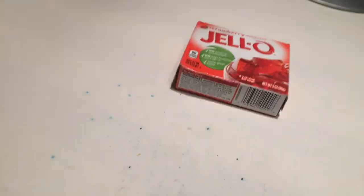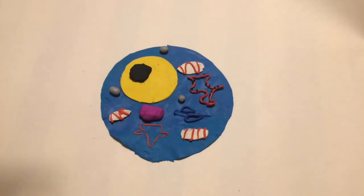The cytoplasm is a jelly-like material inside the cell membrane that holds all the other organelles together. And that is an animal cell.